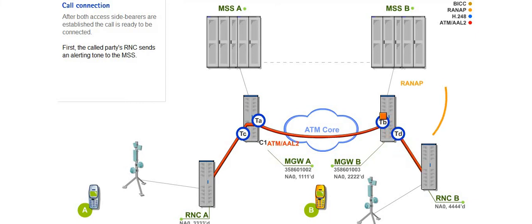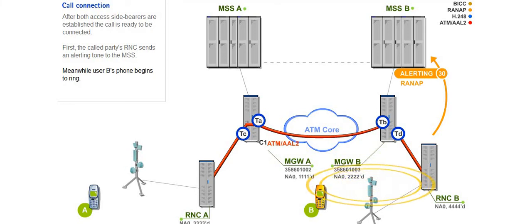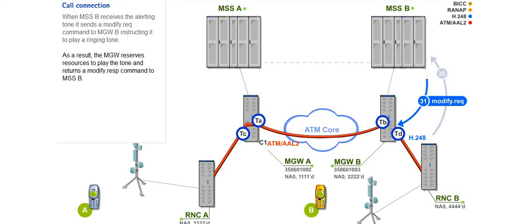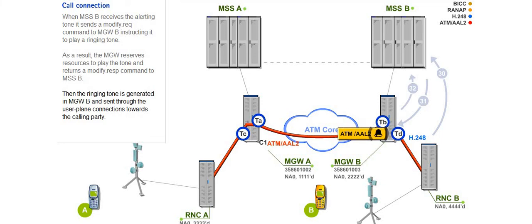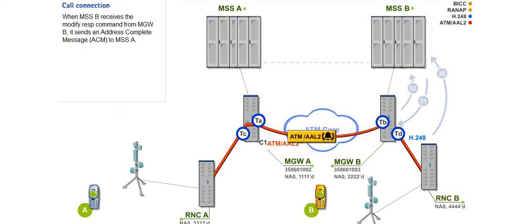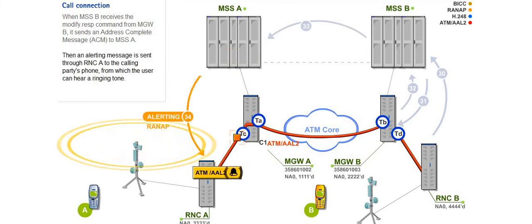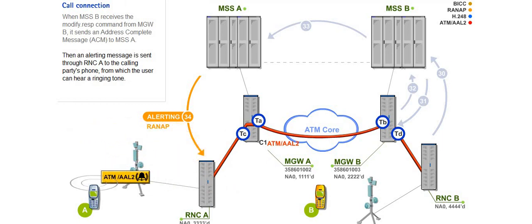First, the called party's RNC sends an alerting tone to the MSS. Meanwhile, user B's phone begins to ring. When the MSS receives the alerting tone, it sends a modify request command to MGWB instructing it to play a ringing tone. As a result, the MGW reserves resources to play the tone and returns a modify response command to the MSS. Then the ringing tone is generated in MGWB and sent through the user plane connections towards the calling party. When the MSS receives the modify response command from MGWB, it sends an address complete message, or ACM, to MSSA. Then an alerting message is sent through RNCA to the calling party's phone, from which the user can hear a ringing tone.